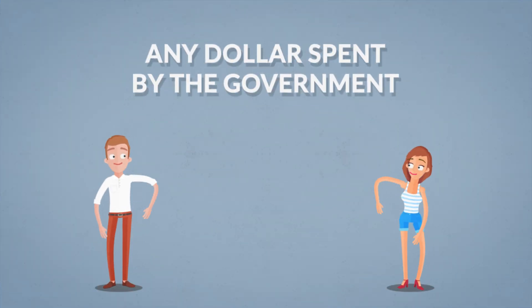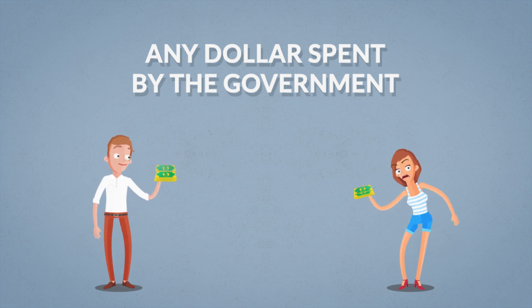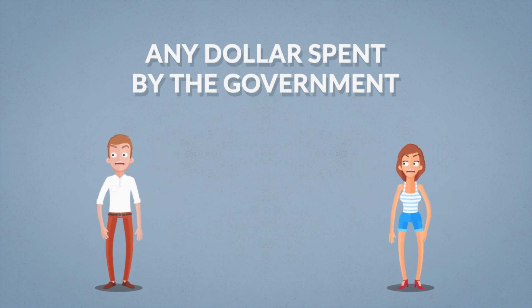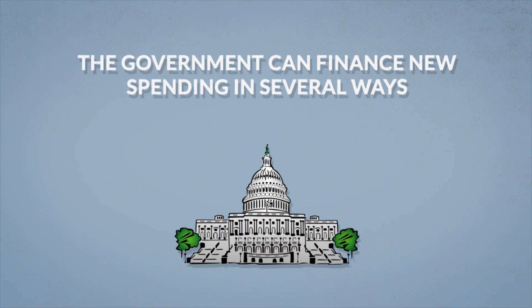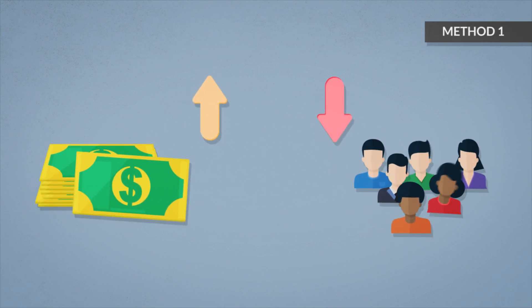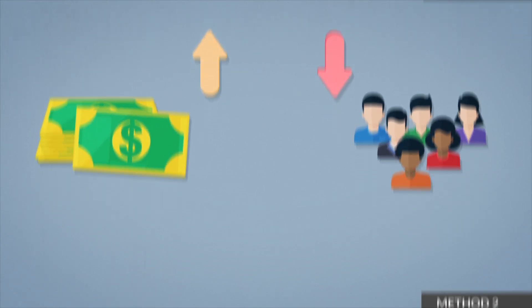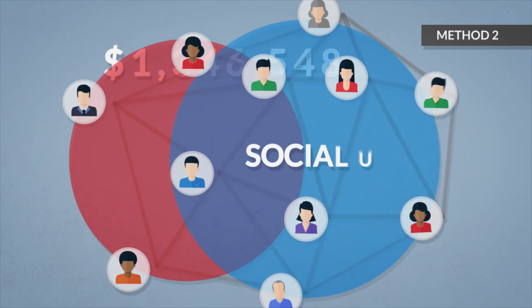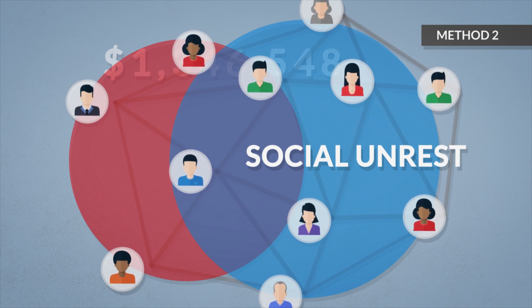Many people don't realize that any dollar spent by the government, sooner or later one way or another, will be taken from the taxpayers' pockets. The government can finance new spending in several ways. Raising taxes is one way to do it, though this method is unpopular. Another option is to cut spending in some sectors, but this can provoke dissatisfaction or even social unrest for the groups cut off from the money faucet.